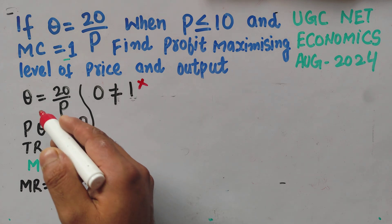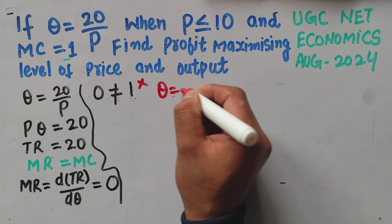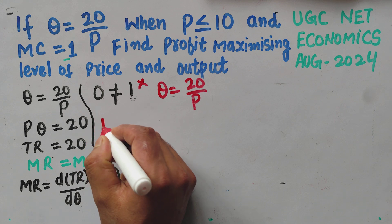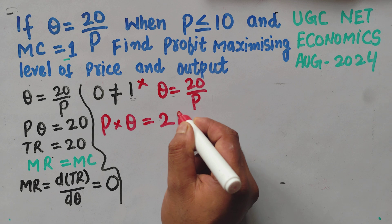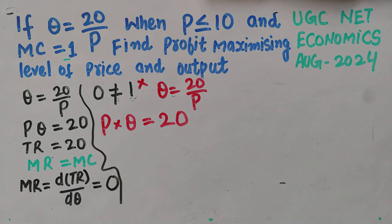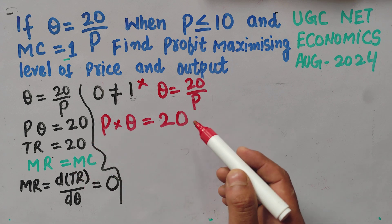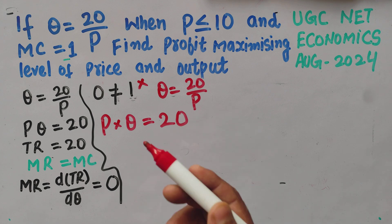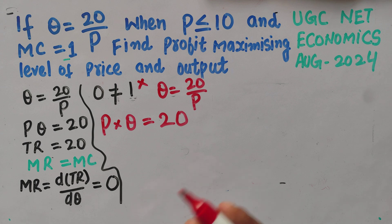Since q = 20/p, rewriting gives us p × q = 20. This means p × q, which denotes total revenue, is a constant equal to 20. So we have a constant total revenue function.